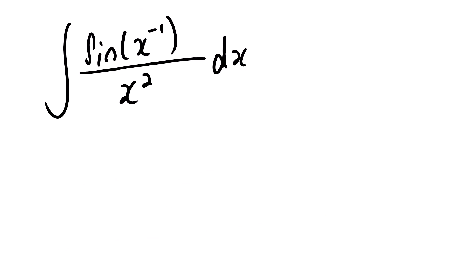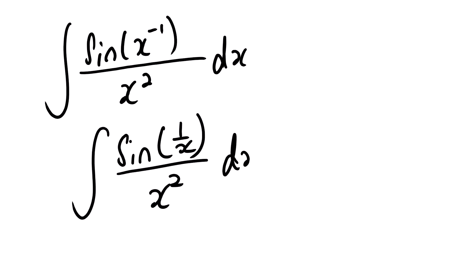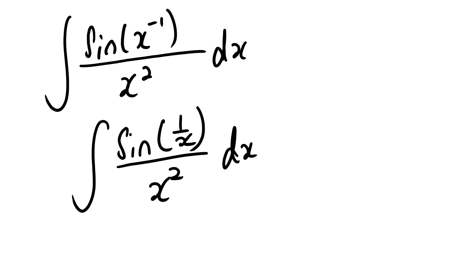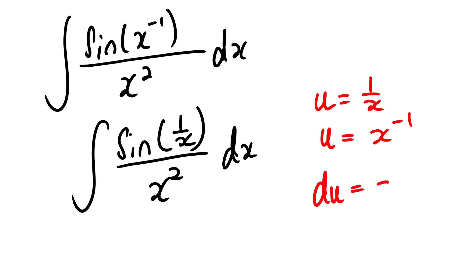Our next example is the integral of sine of x to the power negative 1, over x squared, dx. We can rewrite this as sine of 1 over x, over x squared, dx. Now if we let u equal to x squared, there is no way it will get rid of the angle, since the angle goes hand in hand with sine. So instead we are going to let u equal to 1 over x. We know that 1 over x is the same as x to the power negative 1, then du equals negative x to the power negative 2 dx.